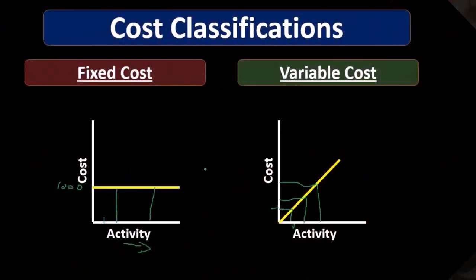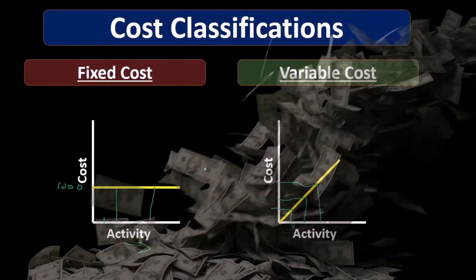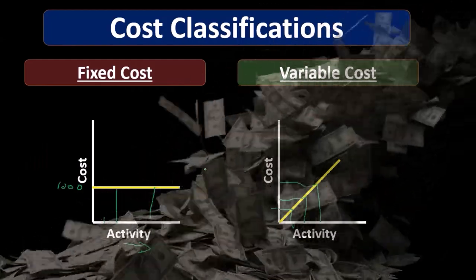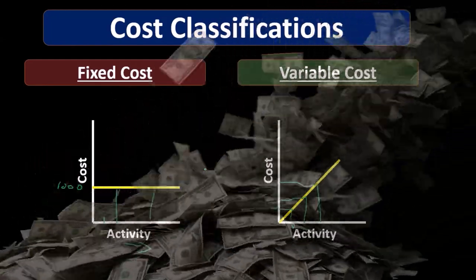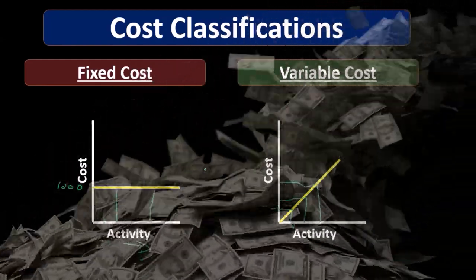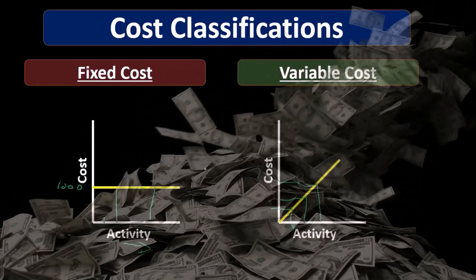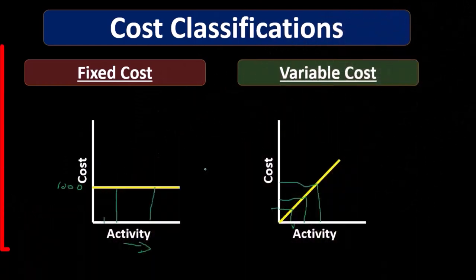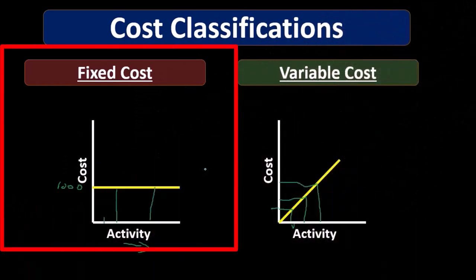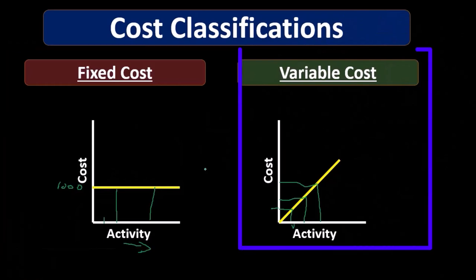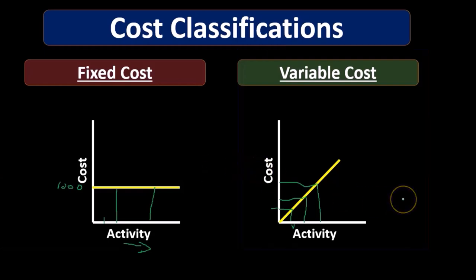Costs are some combination between fixed costs and variable costs. What we really want to do is break them out between those two for our projection purposes. We'll talk about different methods that we can do that. One of our goals in managerial accounting is to break everything out between fixed costs and variable costs, allowing us to make nice projections into the future.